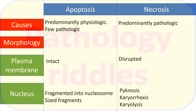Apoptosis causes may be predominantly physiological, though a few pathological causes exist. In necrosis, the predominant causes are pathological. Regarding morphology: the plasma membrane is maintained and intact in apoptosis but disrupted in necrosis. In apoptosis the nucleus may be fragmented into nucleosome-sized fragments. In necrosis there will be pyknosis, karyorrhexis, and karyolysis.